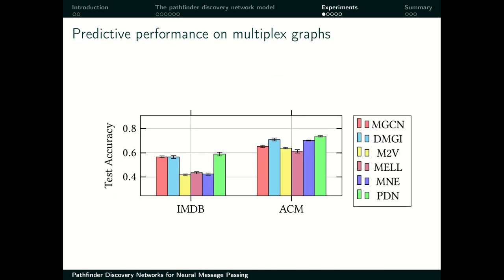The first experiment is node classification on a multiplex graph. These are web graph datasets in which we predict the label of nodes. We compare PDNs, shown in green, to other methods which operate on multiplex graphs — specifically supervised models such as MGZN and DMGI, but also unsupervised ones combined with logistic regression. PDNs have a very high test accuracy score. Some supervised models are comparable, but we are able to beat the unsupervised ones, and most of the differences are statistically significant.